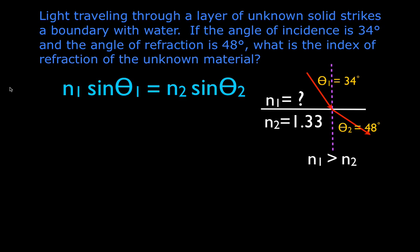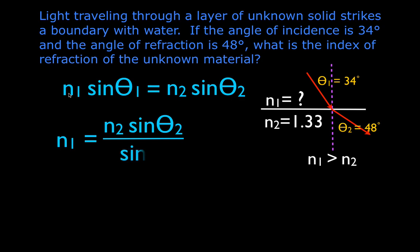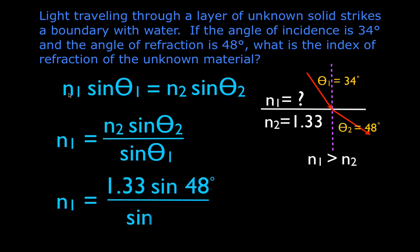Using Snell's Law and solving for N1: N1 = N2 × sine(theta2) / sine(theta1) = 1.33 × sine(48°) / sine(34°), which gives N1 = 1.77. Since 1.77 is greater than N2 = 1.33, this confirms our prediction — light going from a higher index of refraction to a lower index bends away from the normal line, which is exactly what's occurring here.